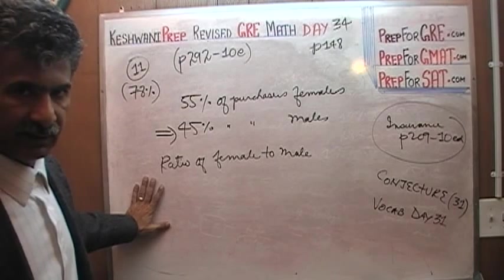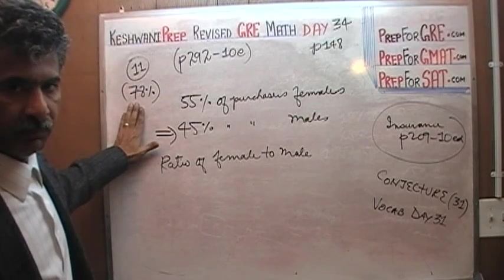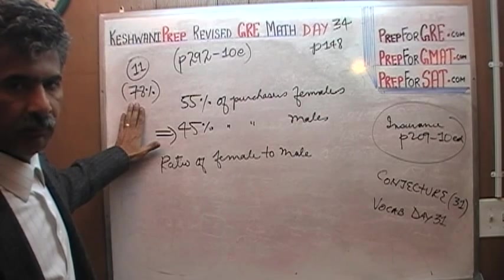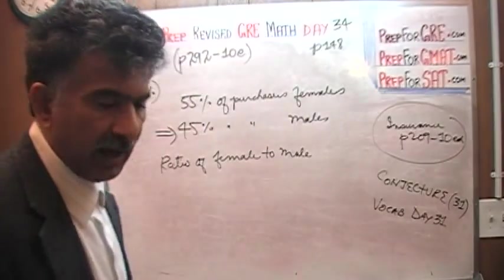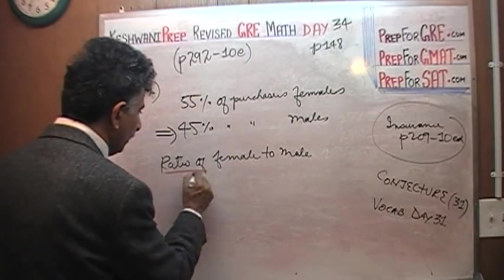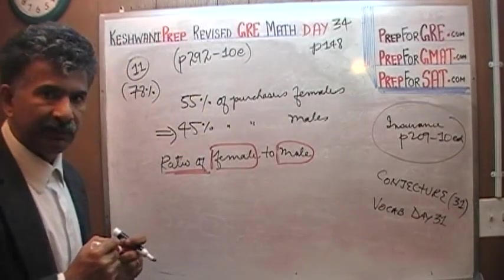So my conjecture is, my guess is that the large number of the 22% of the people who missed it probably missed it because they were being careless, they were not paying attention. You must pay attention to what is being asked. We are being asked for a ratio of female to male, not male to female, female to male.